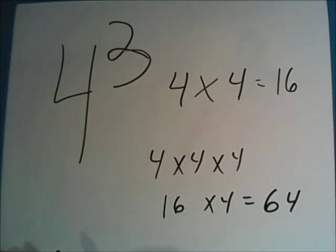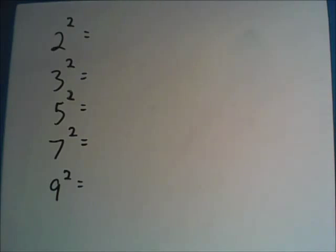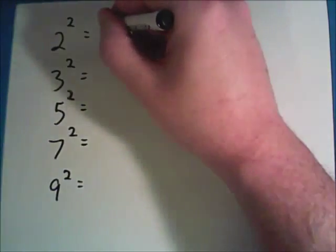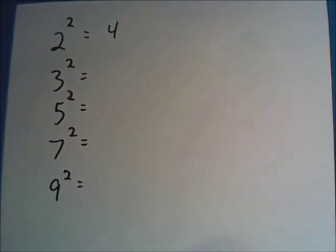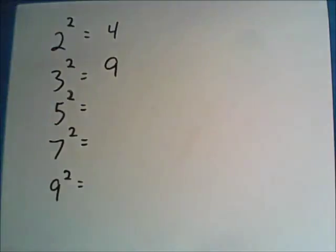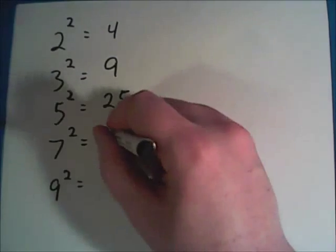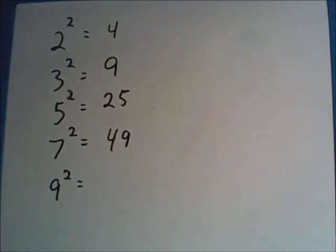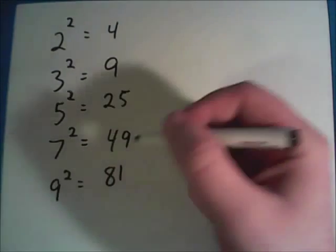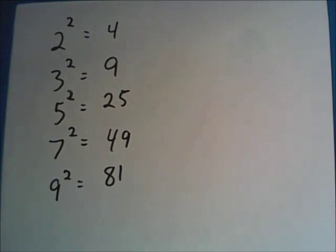Here are a few for you to practice with. If you need additional time, feel free to pause the video. The top one is two squared, so if you just remember this means two times two, you'll get four. Three squared is nine, five squared is 25, seven squared is 49, and nine squared is 81. Most students find that when they've got their multiplication tables memorized, they pretty much have squares memorized too.